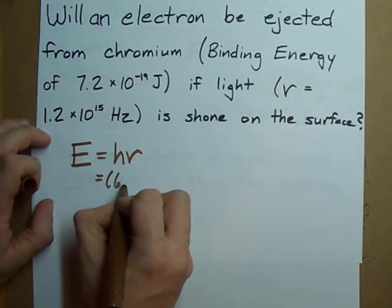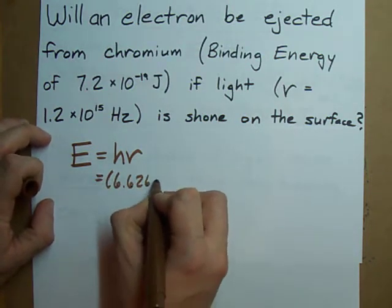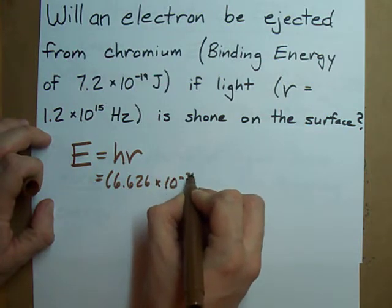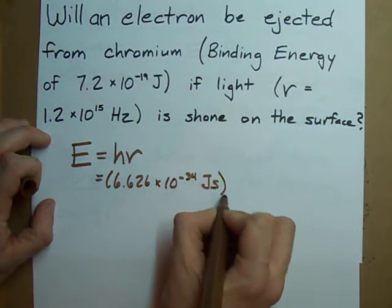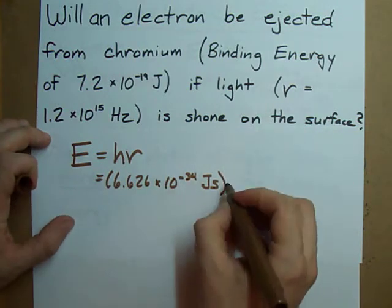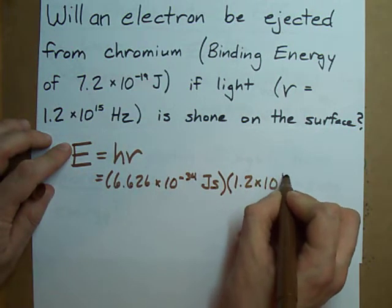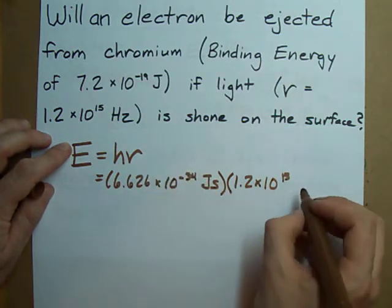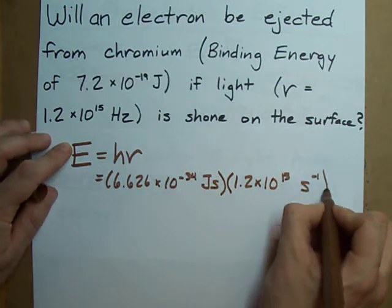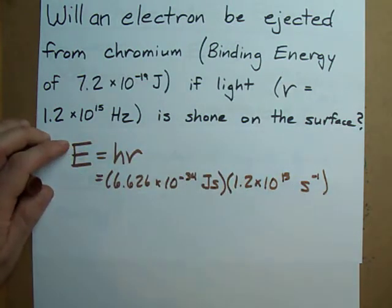That is 6.626 times 10 to the negative 34 joules seconds, times the frequency, in this case 1.2 times 10 to the 15 Hertz, or seconds to the minus 1, as Hertz are also known.